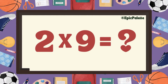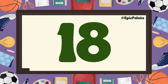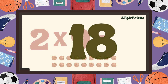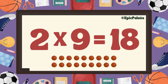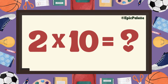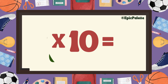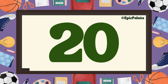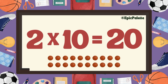Perfect! 2 times 9 equals... 18! That's right! 2 times 9 equals 18. Great job! 2 times 10 equals 20. That's right. 2 times 10 equals 20.